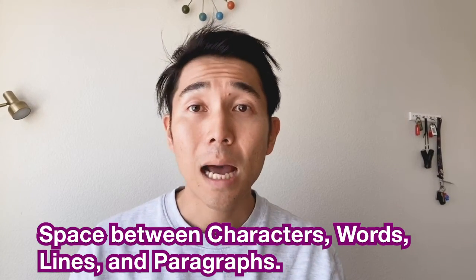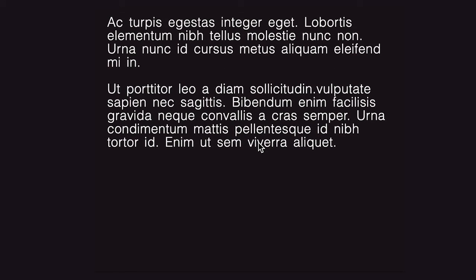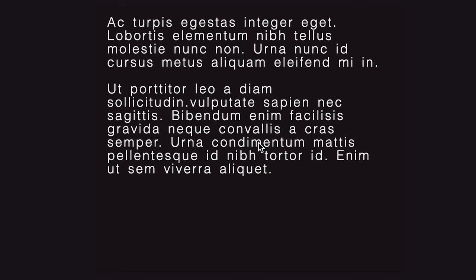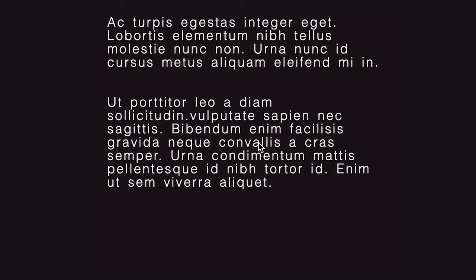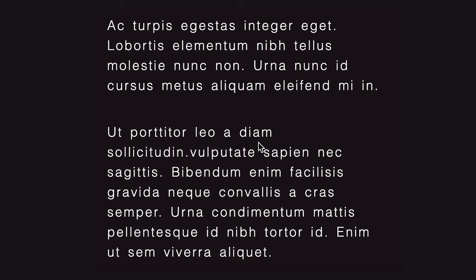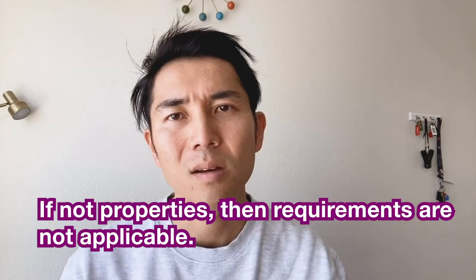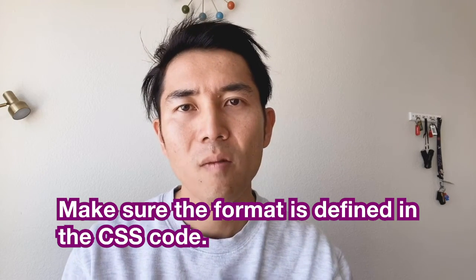Next is text spacing — a WCAG 2.1 update from 2.0. Text spacing refers to the space between characters, words, lines, and paragraphs. Word spacing must be at least 16% of the font size; letter spacing, also known as tracking, must be at least 12% of the font size. Paragraph spacing must be at least 2 times the font size, and line height must be at least 1.5 times the font size. Note that some scripts or languages don't have letter spacing properties, so those requirements are not applicable. Also, not every design tool has controls for all these properties, so make sure the format is defined in the CSS.